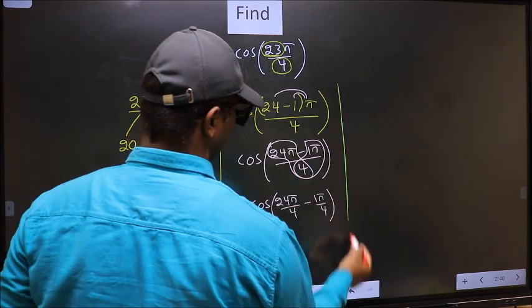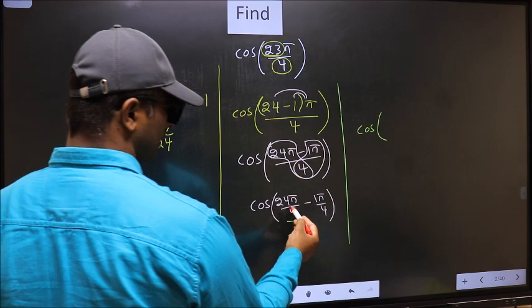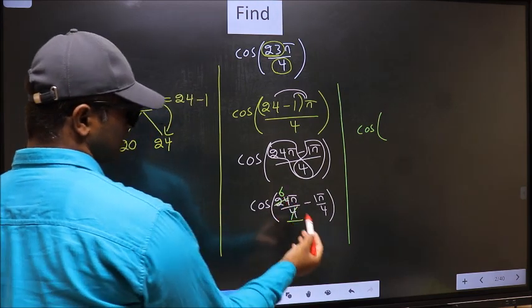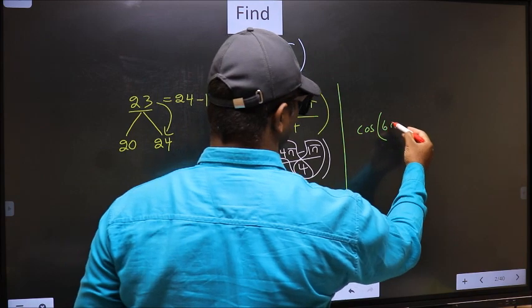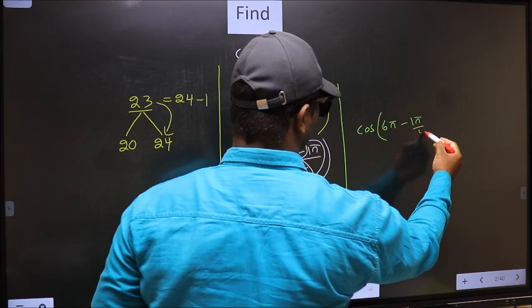Next, cos. Now here, you should cancel. 4 into 24 gives 6. So we get 6π minus 1π by 4.